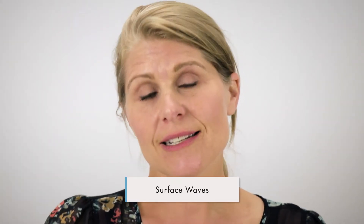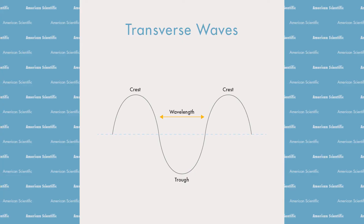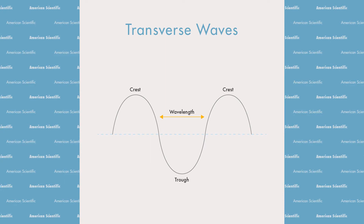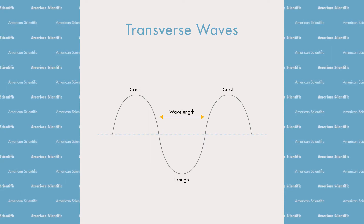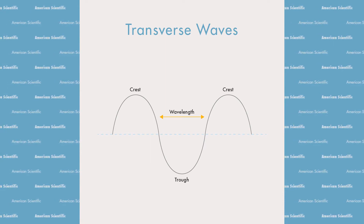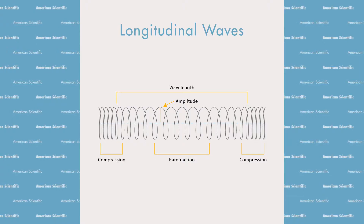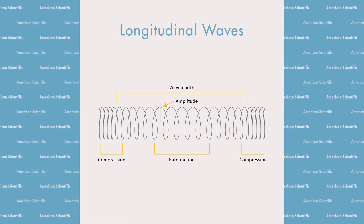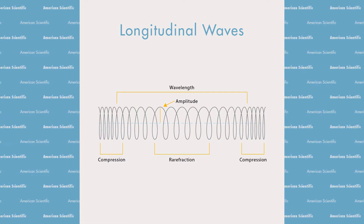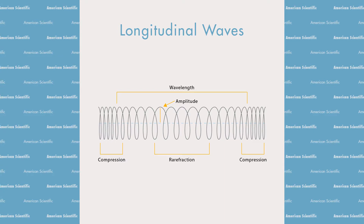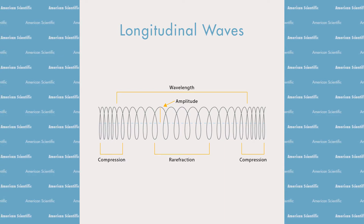Did you know there are three kinds of waves? Transverse, longitudinal, and surface waves. Transverse waves are waves that move up and down, where the highest point is referred to as the crest and the lowest point is known as the trough. Longitudinal waves have compressions and rarefactions similar to a spring or slinky. The compression is the point where the particles are closest to each other, and rarefaction is the point where they are furthest away from each other.